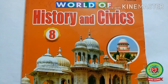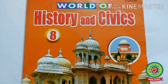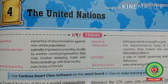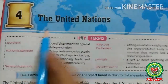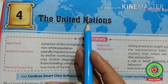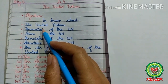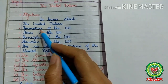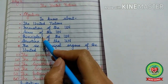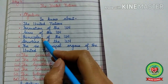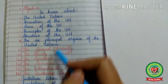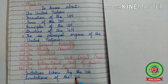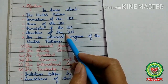Hello everyone, open your History and Civics book, Class 8, Lesson 4: The United Nations. Earlier we had discussed about the United Nations — formation of the UN, aims and principles of the UN, structure of the UN, initiatives taken by the UN, and the limitations of the UN.